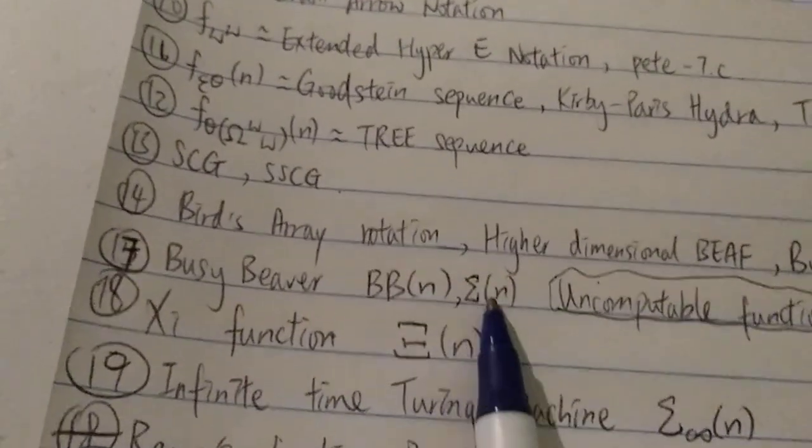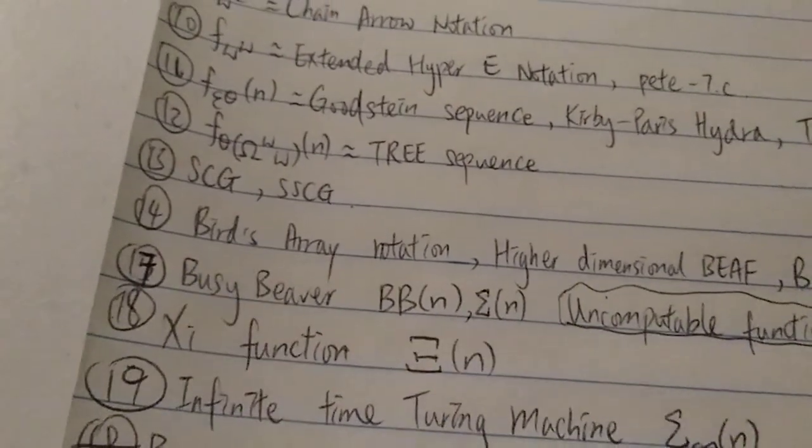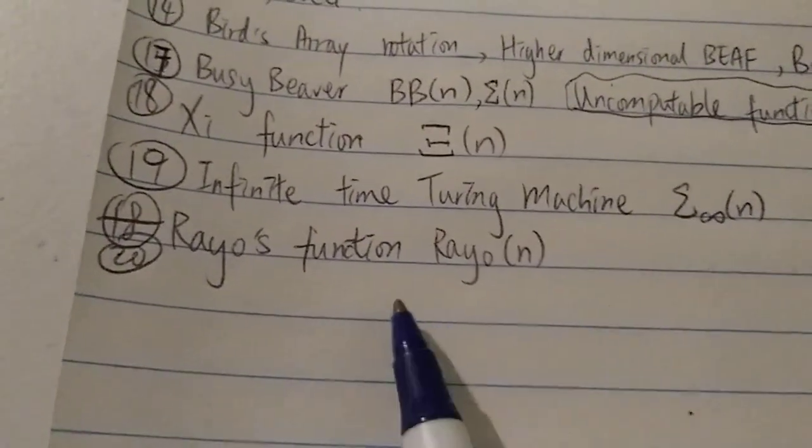Like 3↑↑↑↑3, SCG, you know, if n is big enough, it grows faster than that. And of course, beyond Rayo's function, we probably have some more even faster growing functions.